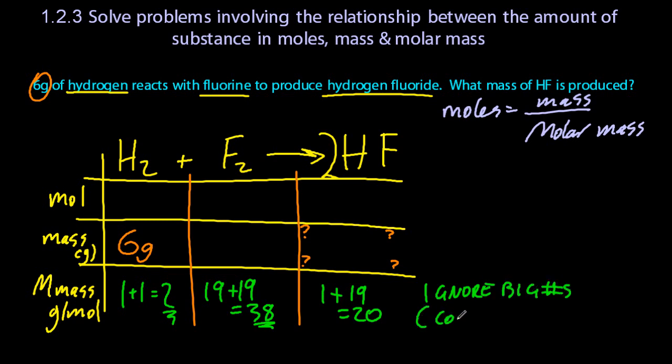So each line has a rule. And the rule for the bottom line is ignore the big numbers, which are the coefficients in the equation. So it says 2HF, ignore that big 2. Just look at the molar mass of H and add it to F. So moles is mass over molar mass, so 3 is really 6 divided by 2.